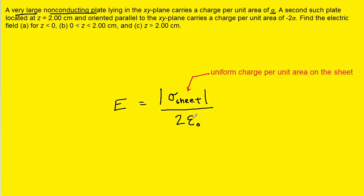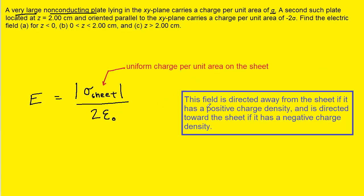There are a couple of other facts we need to understand. The electric field is directed away from the sheet if there is a positive charge density, and directed towards the sheet if there is a negative charge density.